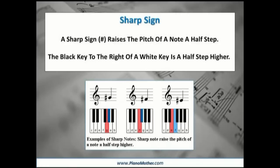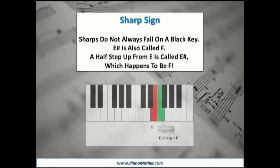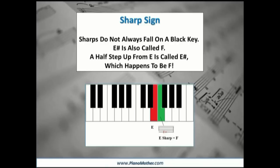A sharp sign raises the pitch of a note a half-step. The black key to the right of a white key is a half-step higher. Sharps do not always fall on a black key. E-sharp is also called F — a half-step up from E is called E-sharp, which happens to be F.